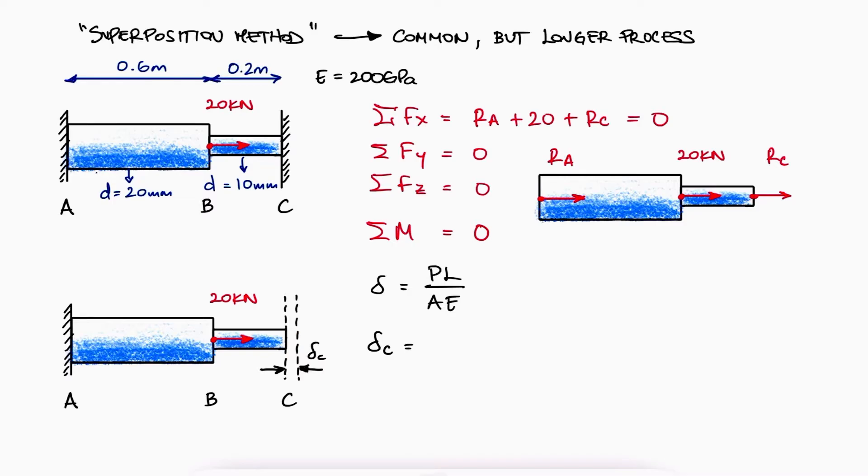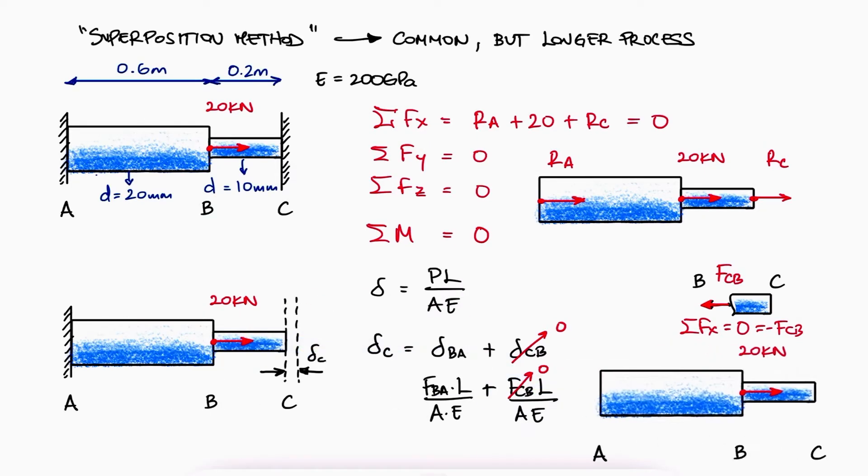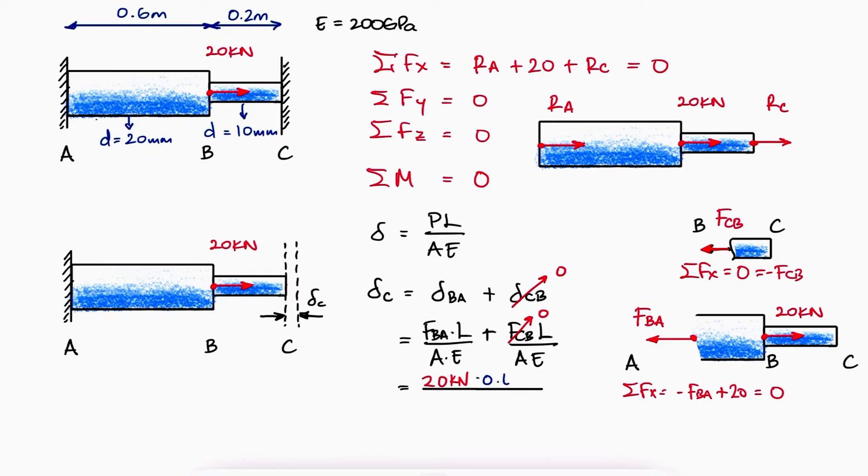The displacement at C would be equal to that of B with respect to A plus that of C with respect to B. Since there is no internal force between B and C, that deformation would be zero and for B with respect to A, we would have an internal tensile force equal to the external load. This would allow us to calculate the overall displacement.